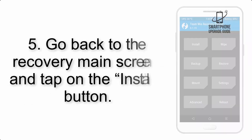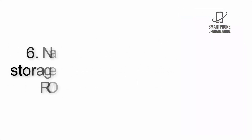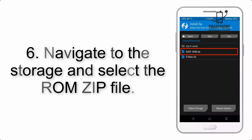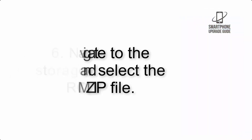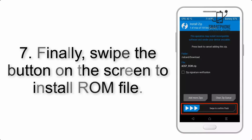Step 4: Swipe the button to wipe the device. Step 5: Go back to the recovery main screen and tap on the Install button. Step 6: Navigate to the storage and select the ROM zip file.